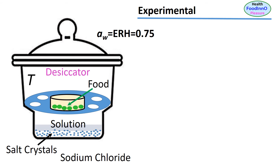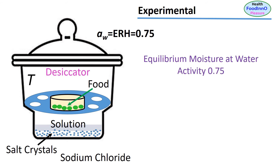We can place a food sample inside the desiccator to equilibrate. After equilibration, we know the equilibrium moisture content of the sample at a relative humidity of 0.75, which is the water activity of 0.75 — the water activity of the sample. This method is called the isostatic method.